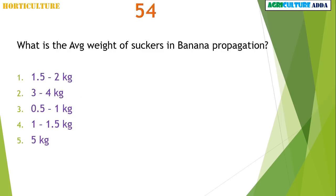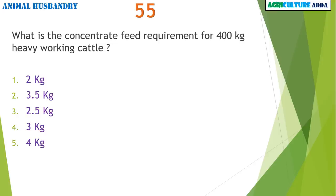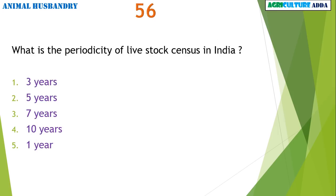What is the average weight of suckers in banana propagation? 1.5 to 2 kg. What is the concentrate feed requirement for 400 kg heavy working cattle? 3 kg concentrate feed. What is the periodicity of livestock census in India? 5 years.